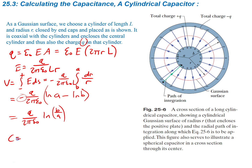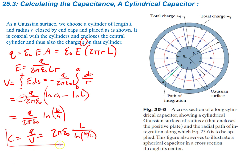To find the capacitance, we use C equals Q over V. Plugging in what we found for Q and V and simplifying, we end up with C equals 2π ε₀ L divided by the natural log of B over A. This is the capacitance of a cylindrical capacitor.